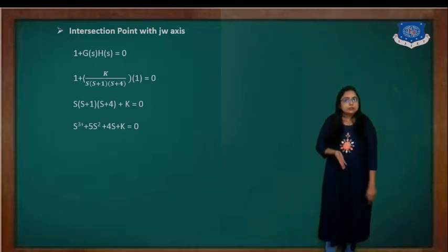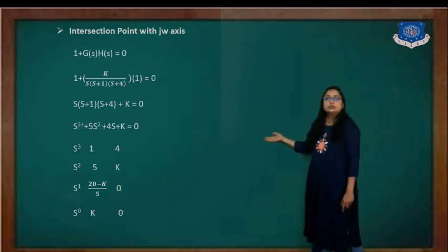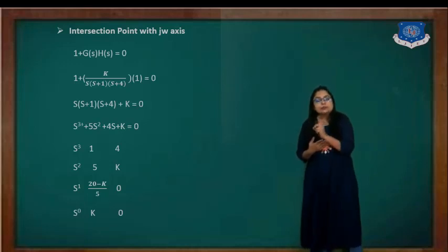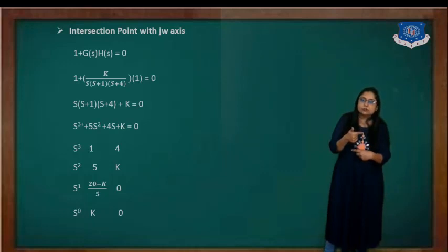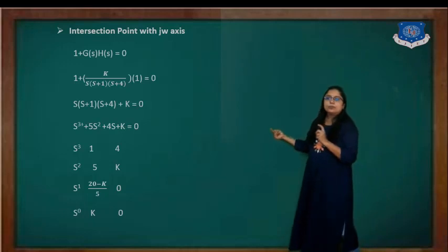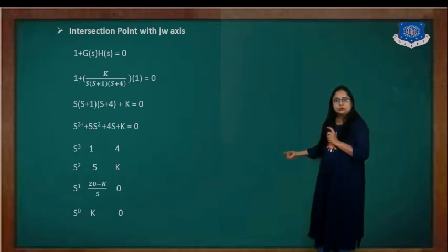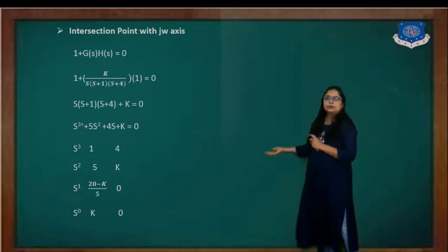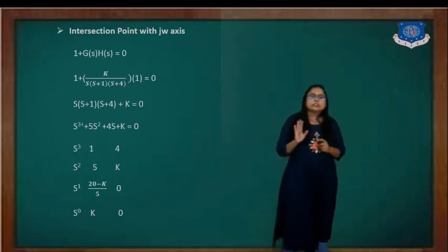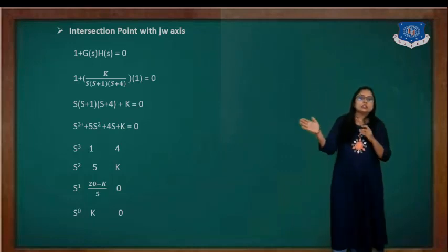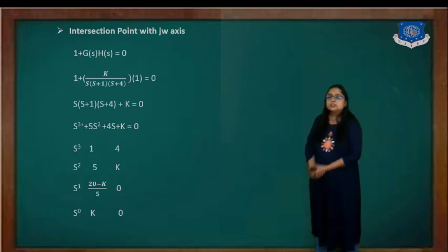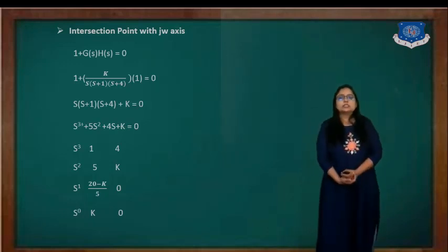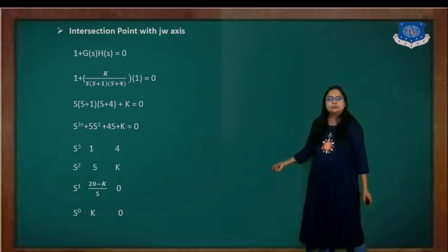We set up the Routh array. First row has odd powers of S: the S cubed row has coefficients 1 and 4. The second row (S squared, even power) has 5 and K. For the S to 1 row, we compute: (5 times 4 minus K times 1) divided by 5, which gives (20 minus K)/5. For the S to 0 row, we get the value K. This is the Routh-Hurwitz table.